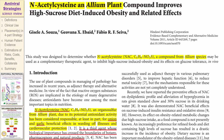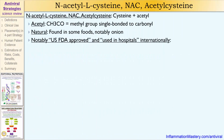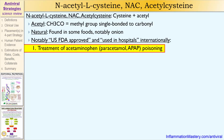Acetylcysteine is natural and is found in some foods, most notably onion and garlic. It is FDA-approved and used in hospitals internationally, mostly for the treatment of acetaminophen or paracetamol poisoning. Generally speaking, it's more than 97% effective if administered within 8 hours of the poisoning.